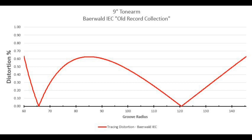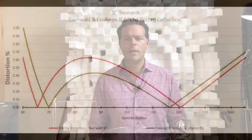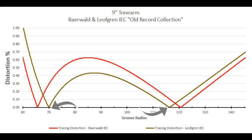Here's the same tracing distortion pattern for Baerwald as seen before, just using a more sensitive distortion scale. This graph shows that Baerwald did a pretty good job of ensuring the distortion at the worst points across the record — the beginning, the end, and around 86 millimeters — were pretty equal to each other. However, Lofgren did it differently.